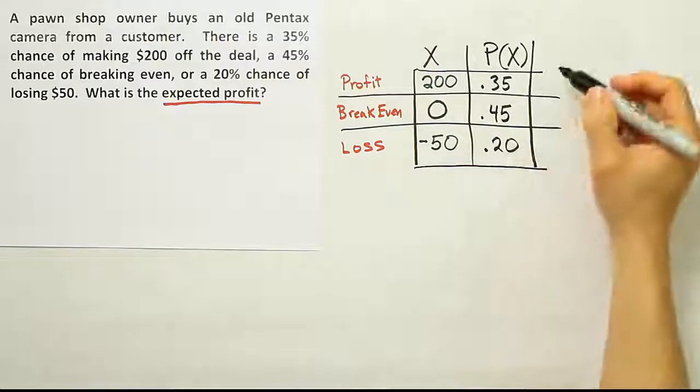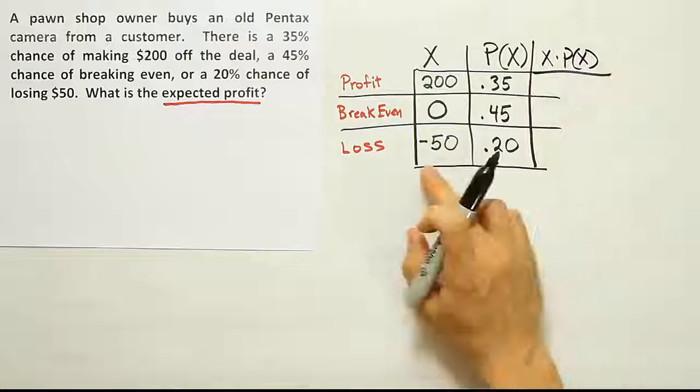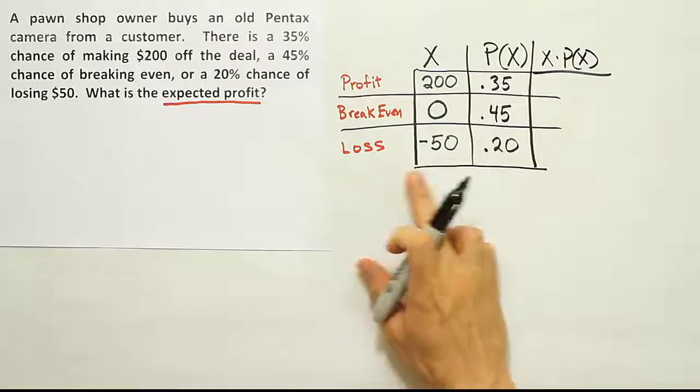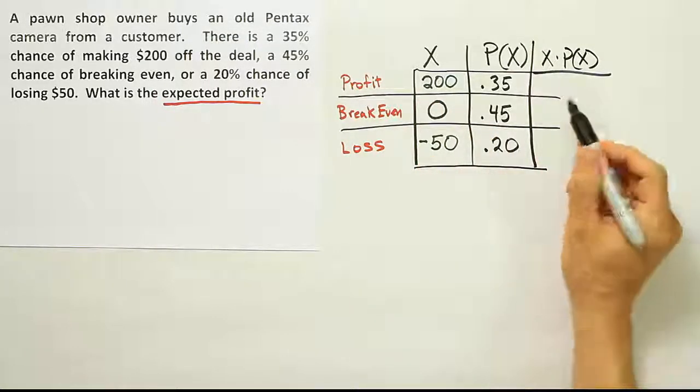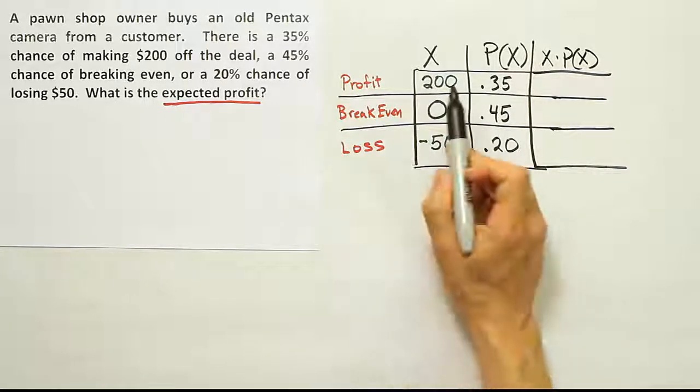Once we have the table set up properly, then we're going to do X times P(X). I want you to get in the habit of looking and making sure that any loss you have represented in the problem has a negative sign before you even do the multiplication. Because if you do that wrong, you'll end up with the wrong answer.